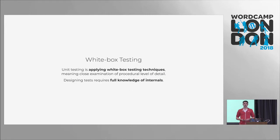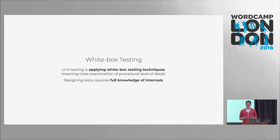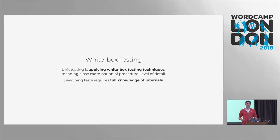Unit testing is also white box testing. This means our software — the code snippet that you're testing — is not a black box to you. White box is the most well-known name for that, but it can also be called glass box testing, which is really what I want to call it, because you can see through the box and see the code. This means if you want to design unit tests, you have to have knowledge about the code.